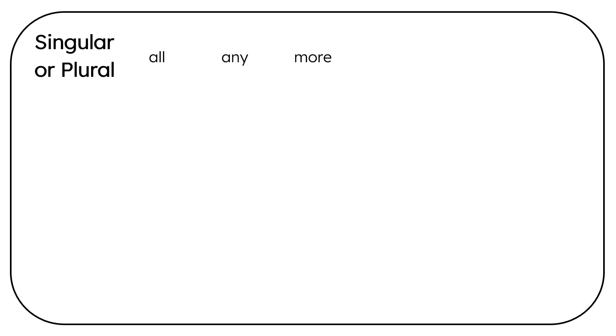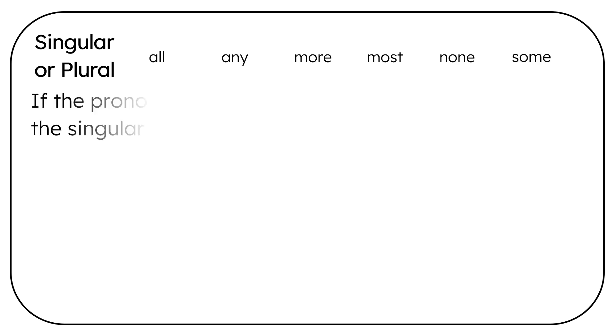Then we have singular or plural. There are six of them: all, any, more, most, none, some.